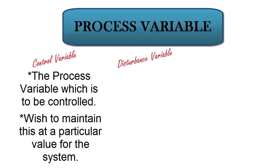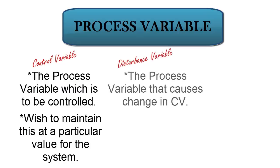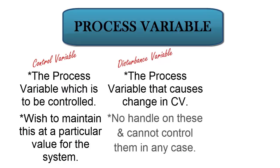Second, the disturbance variable. This is the process variable that causes change in our control variable. We have no handle on these and cannot control them in any case.